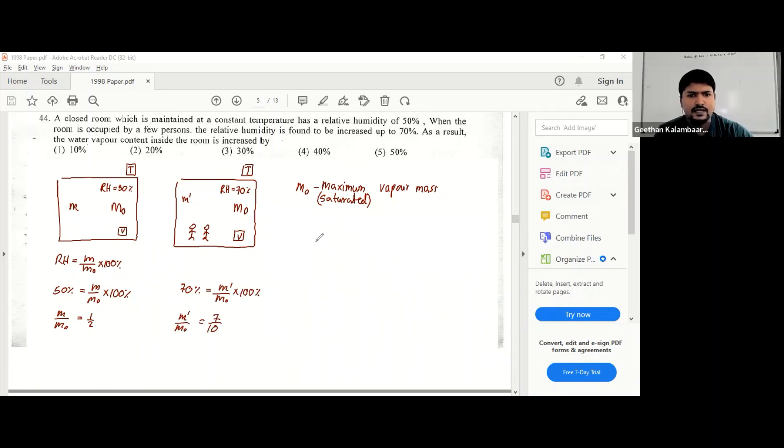They're asking by how much of a percentage is the vapor content increased. So the increased amount is M dash minus M divided by the initial multiplied by 100%, which is the percentage increase. So this is M dash over M minus 1 into 100%. How do you get M dash over M? By dividing the two equations, equation 1 and equation 2.